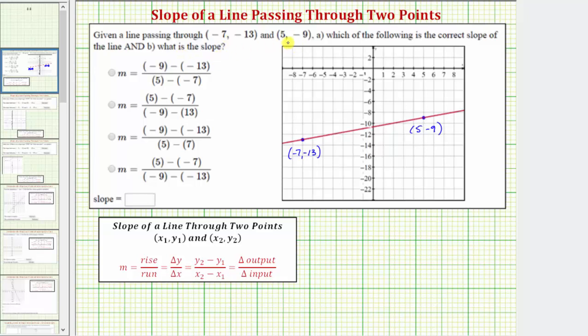Notice how if we plot these two points on the coordinate plane: for the point (-7, -13), from the origin we would go left 7 units and down 13 units. For the point (5, -9), from the origin we go right 5 units and down 9 units.